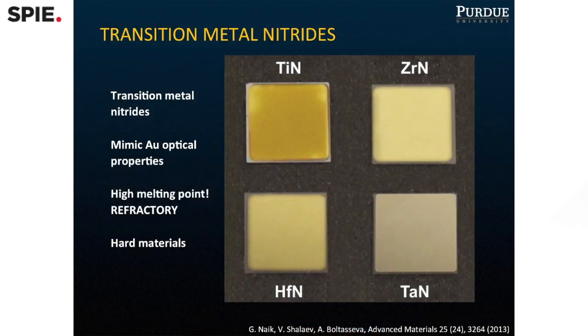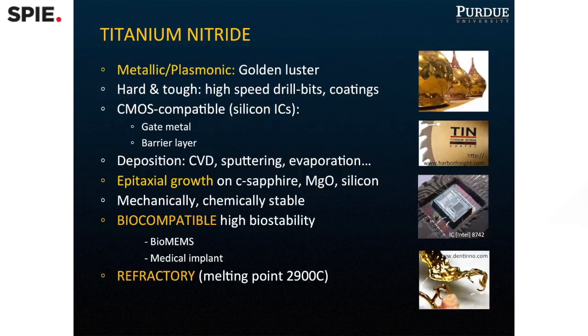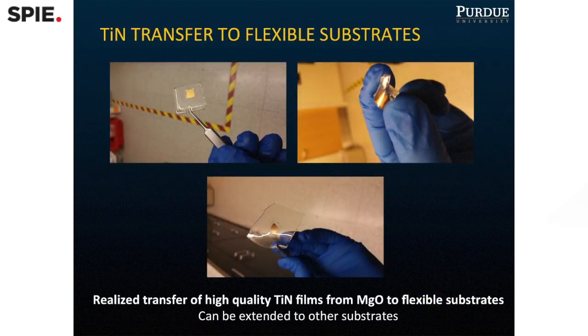By finding materials such as transition metal nitrides—for example, titanium nitride or zirconium nitride—that have the highest melting temperatures close to 3000 degrees Celsius, we can design structures that would not deform in ways that would have detrimental effects on their performance.